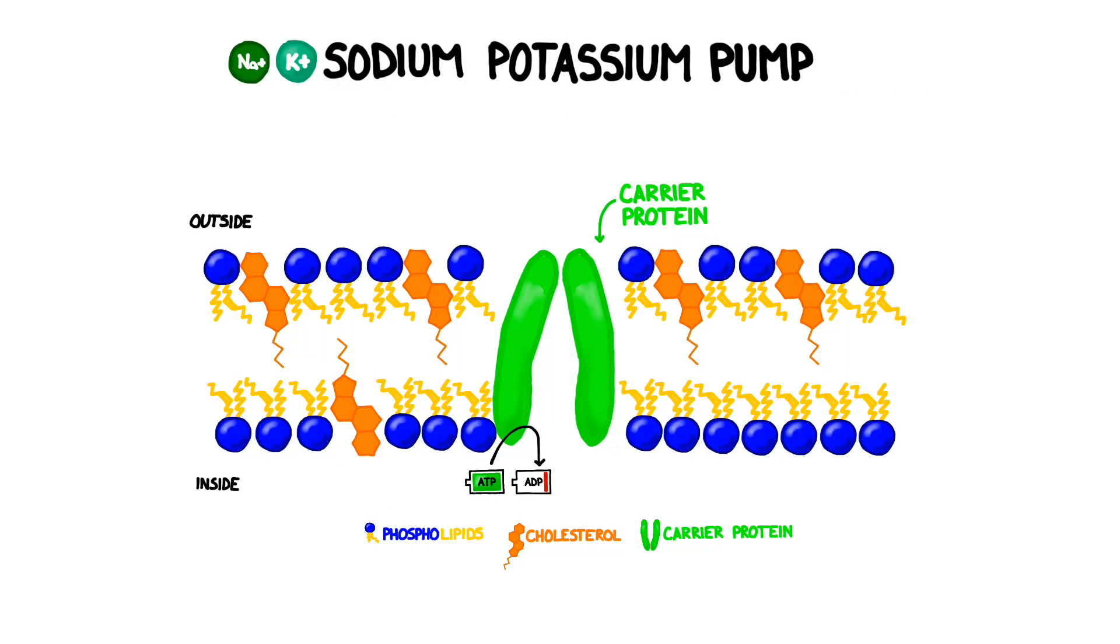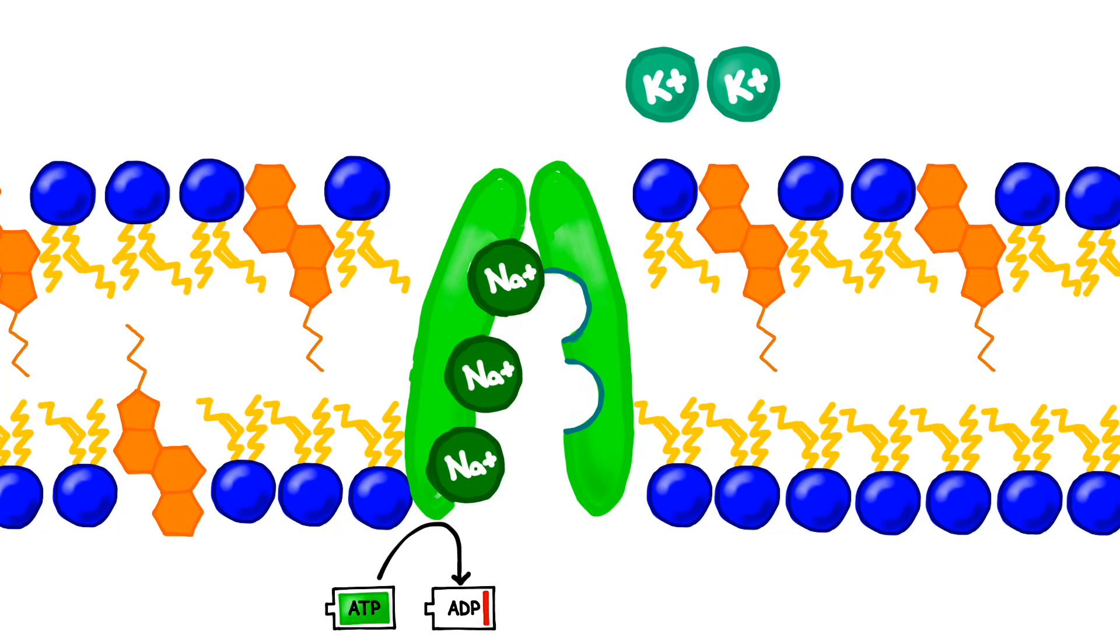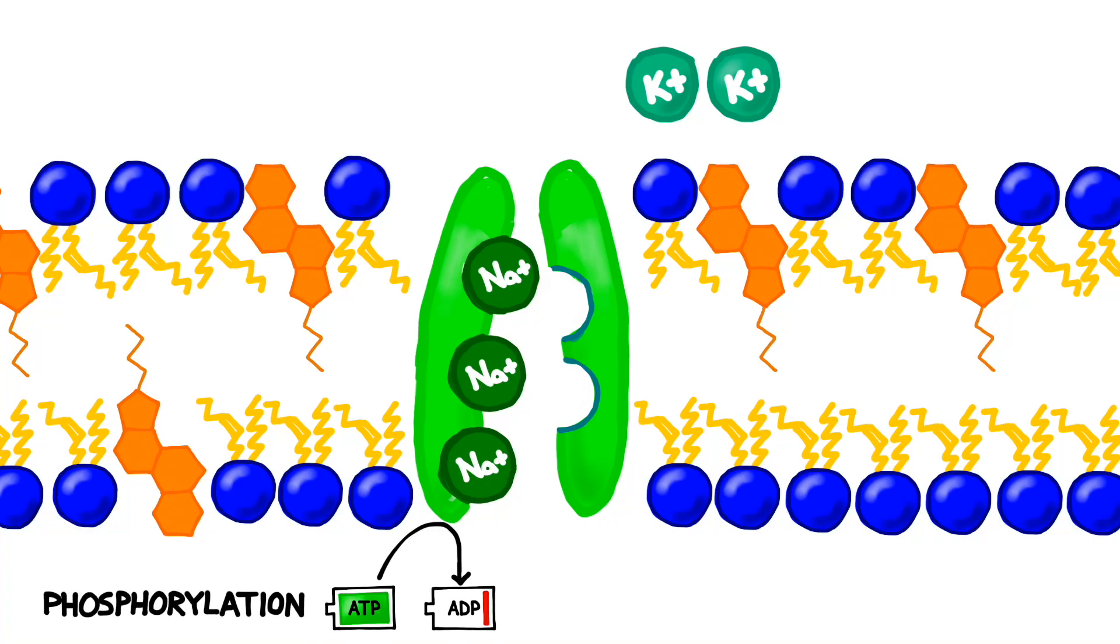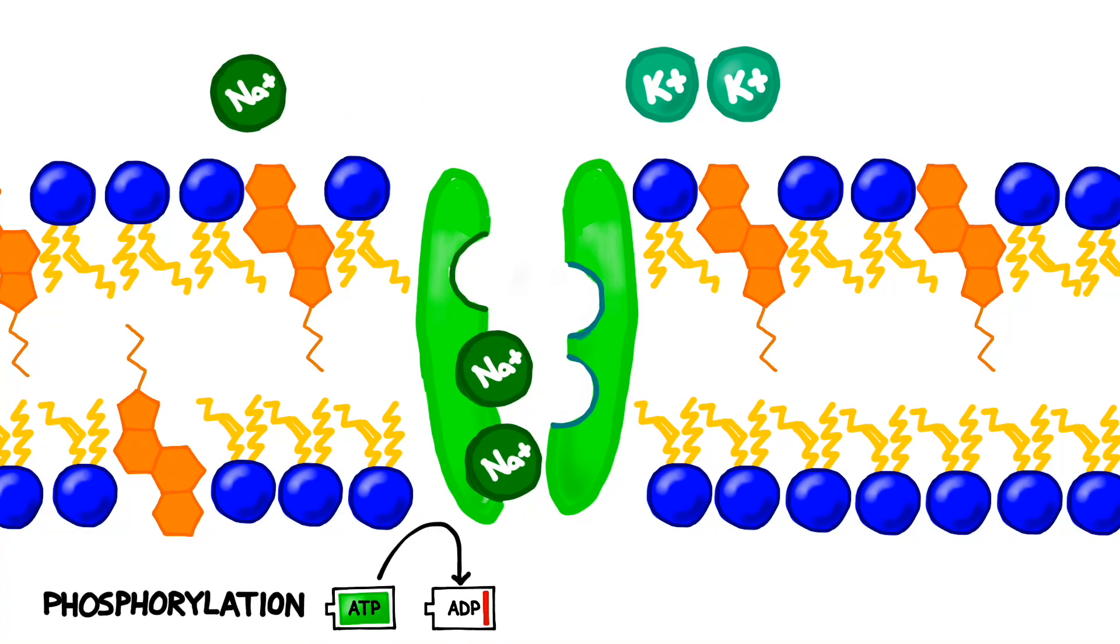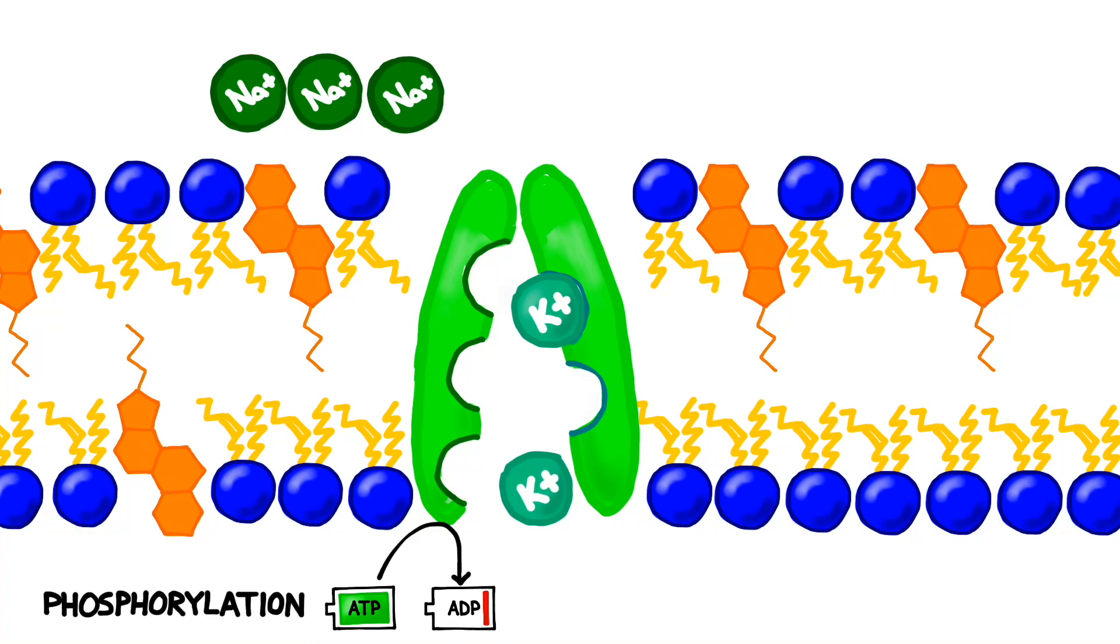A great example of this is the sodium-potassium pump, which pumps sodium out of cells and potassium into cells, allowing neurons to work. Three sodium ions enter the carrier protein, which is then charged by a molecule of ATP in a process called phosphorylation. The protein then undergoes a conformational change, delivering the sodium to the outside of the membrane. The process is then reversed, this time delivering potassium to the inside and returning the protein to its original shape.